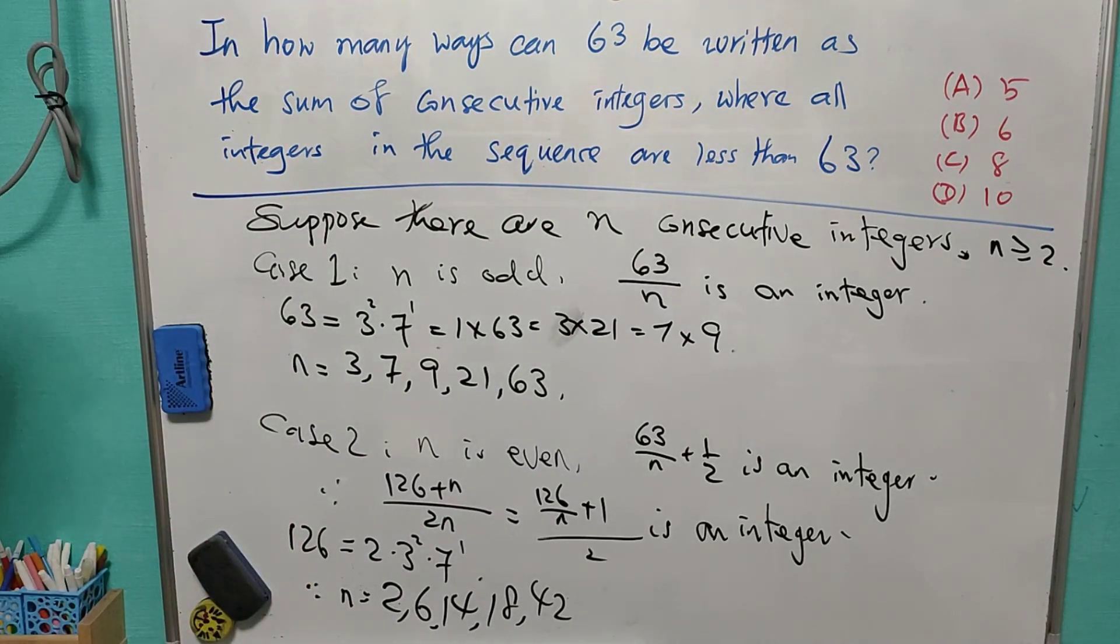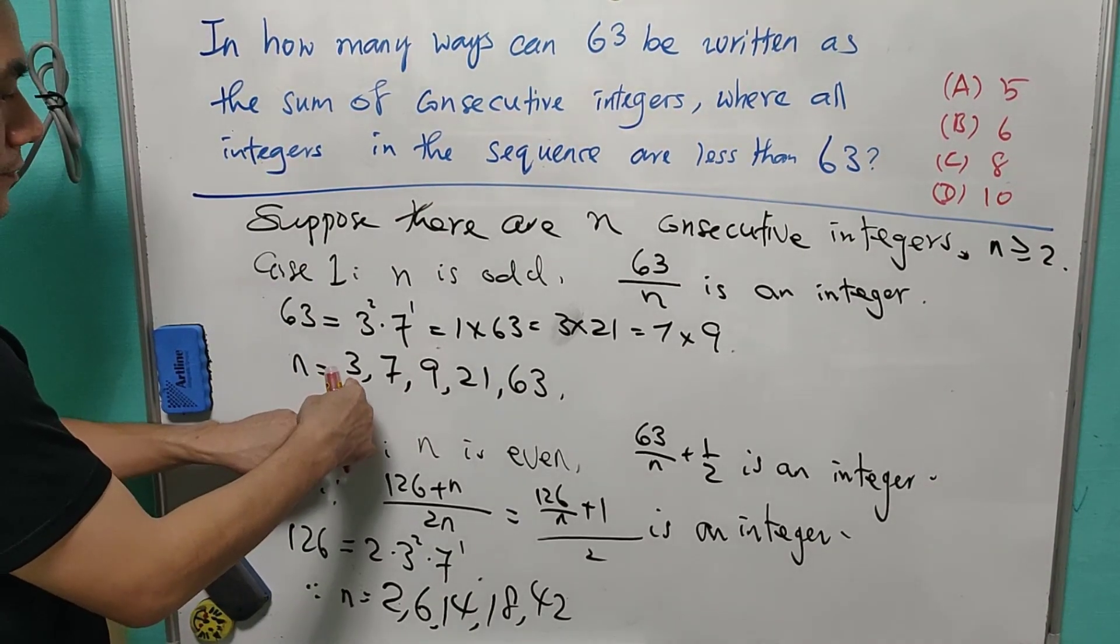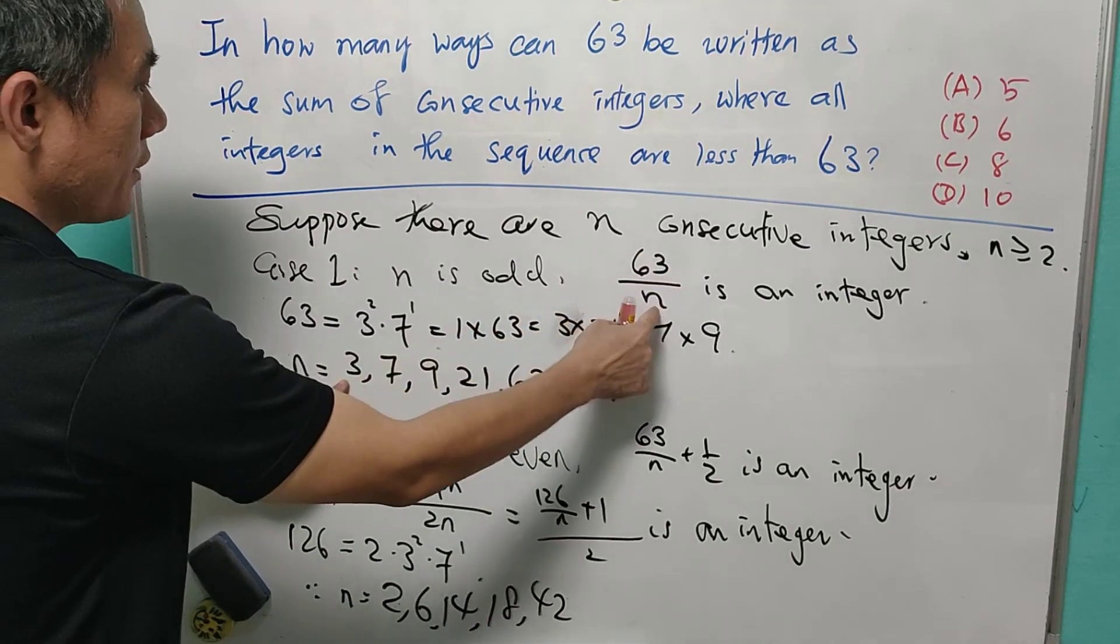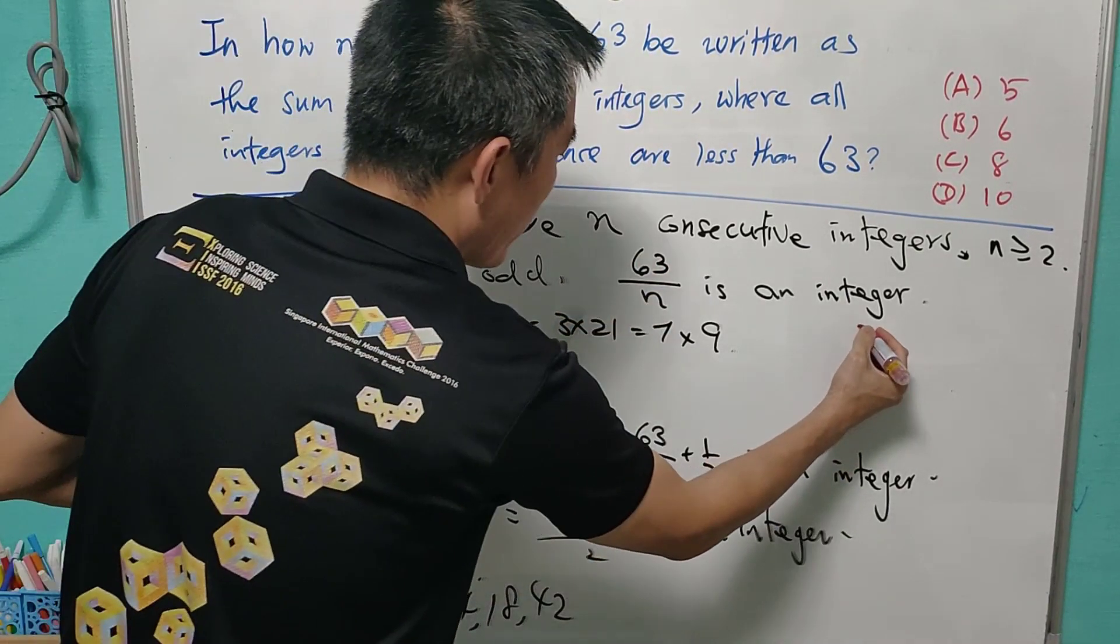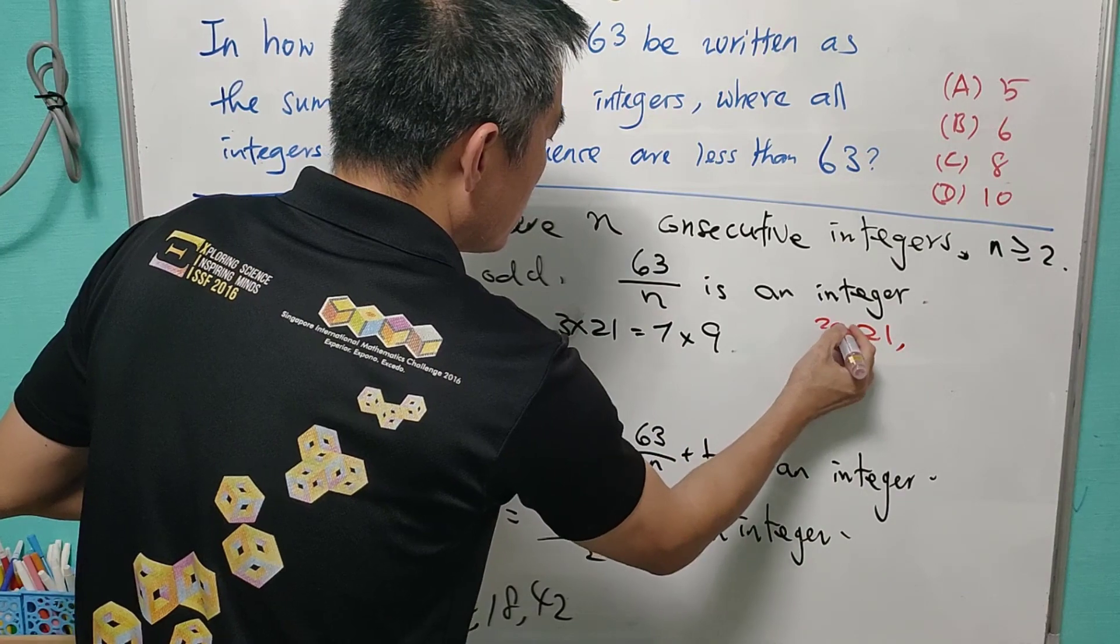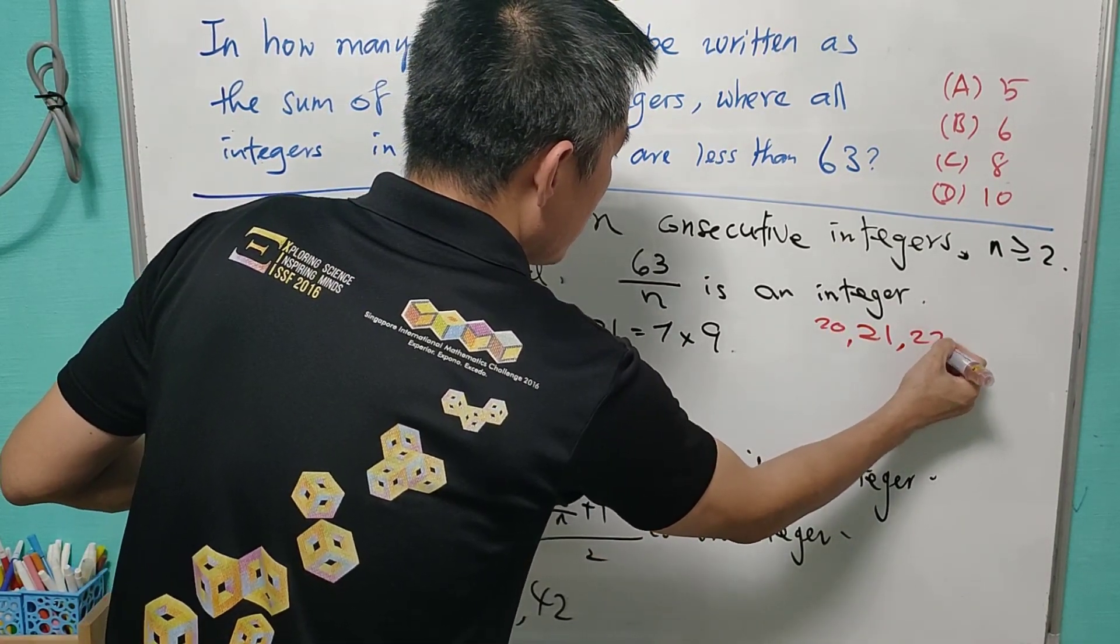Now, to convince you a little bit more, let us list out the sequences for each of the n. So for n equals to 3, 63 over 3 is equal to 21. That will be the average. So these are the 3 integers.